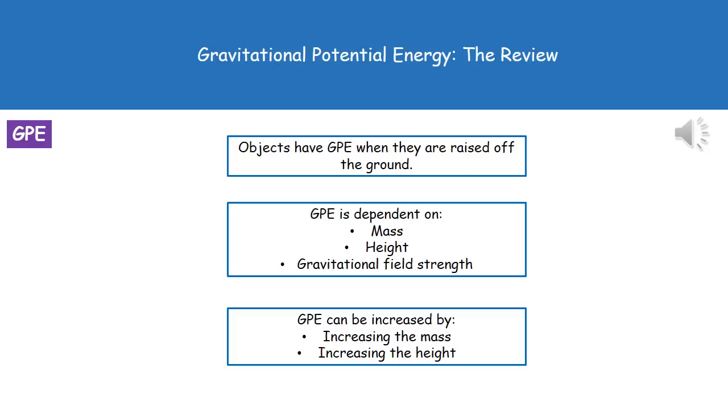The amount of GPE that an object has is dependent on three things: the mass of the object, the height it's raised off the ground, and the gravitational field strength.